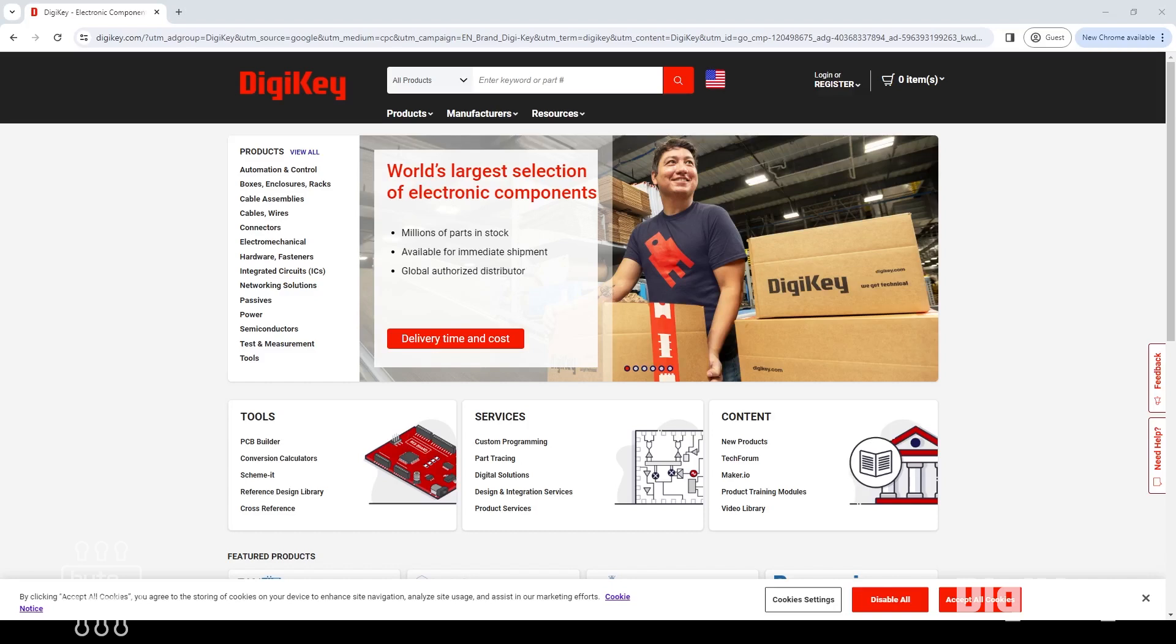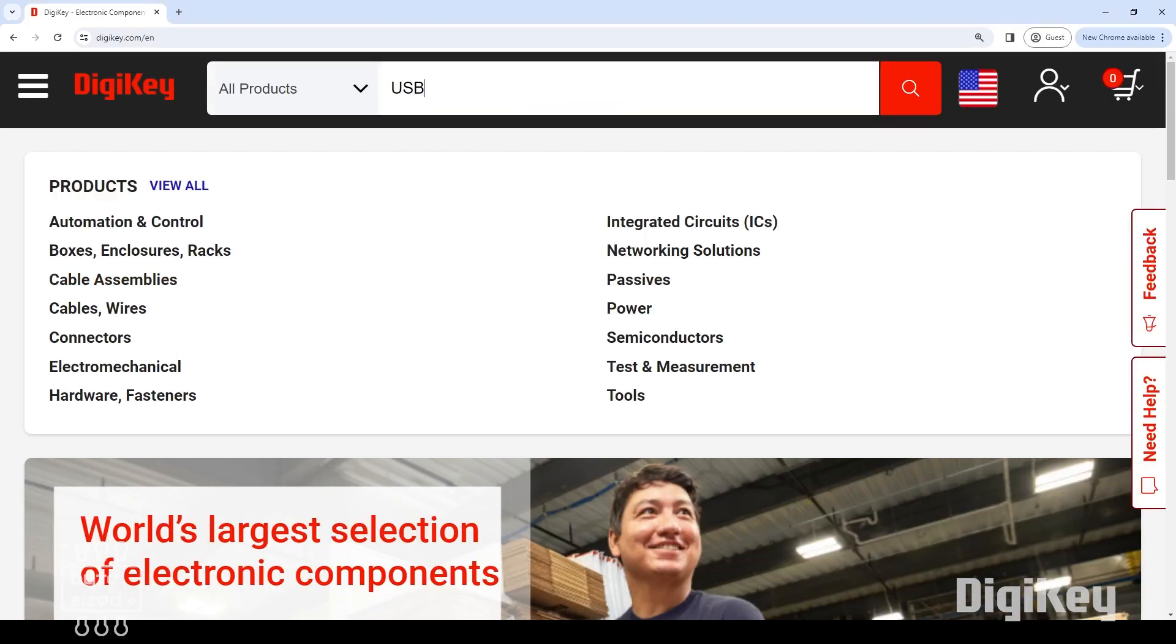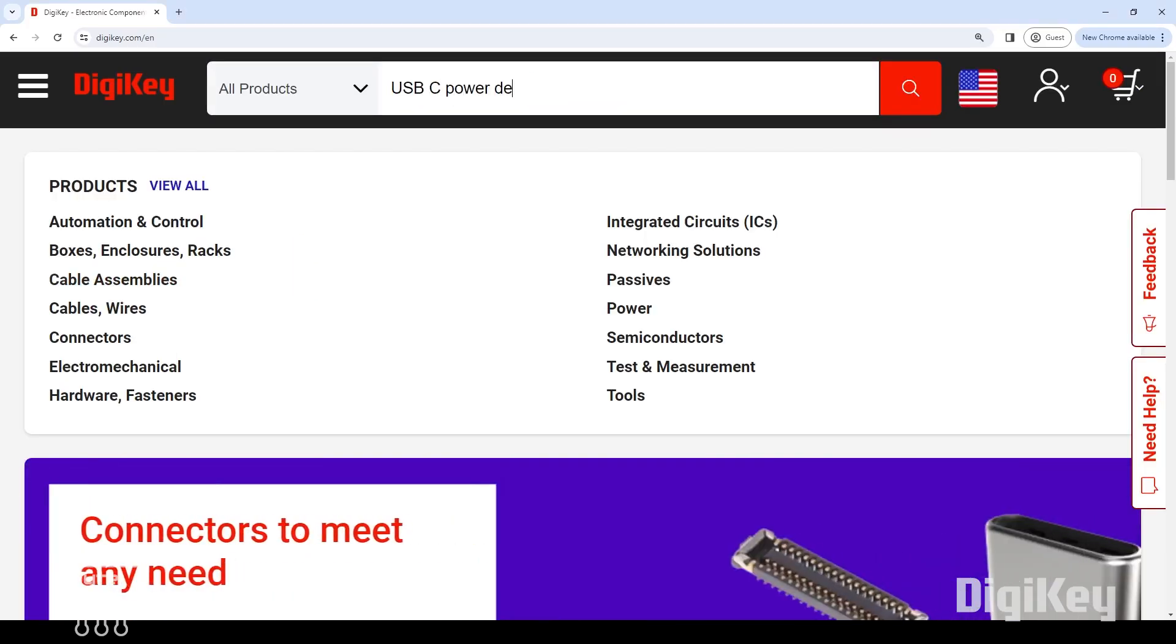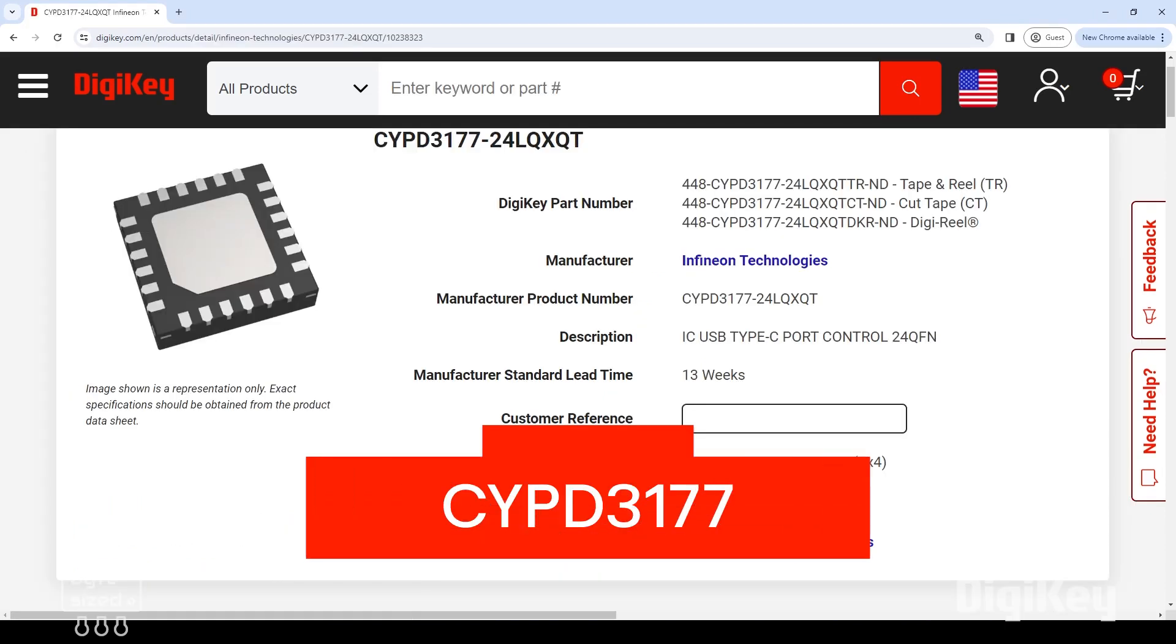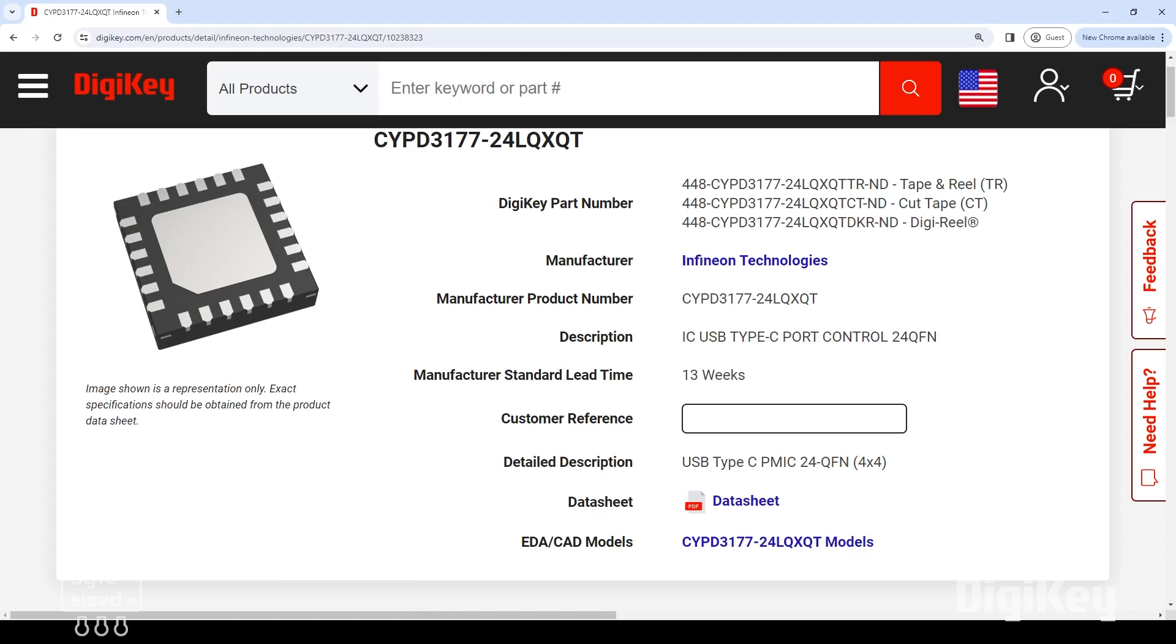First, I need to figure out which chip I'm going to use for the USB-C power delivery stuff. I did a quick search on Digikey and I found the Infineon CYPD-3177. This chip will handle all of the negotiation for USB-C power delivery.